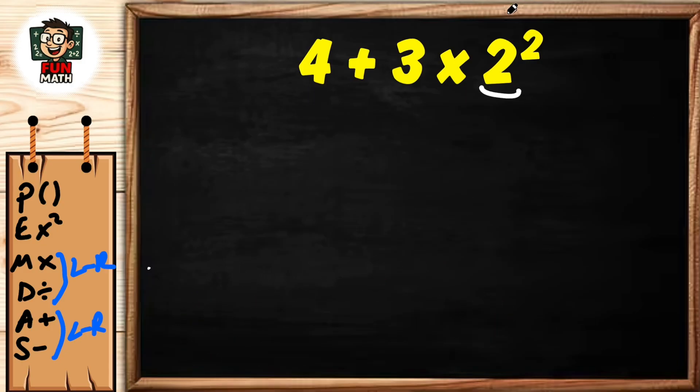First, exponents: 2 to the power of 2 equals 2 times 2, which equals 4. So we have 4 plus 3 times 4.